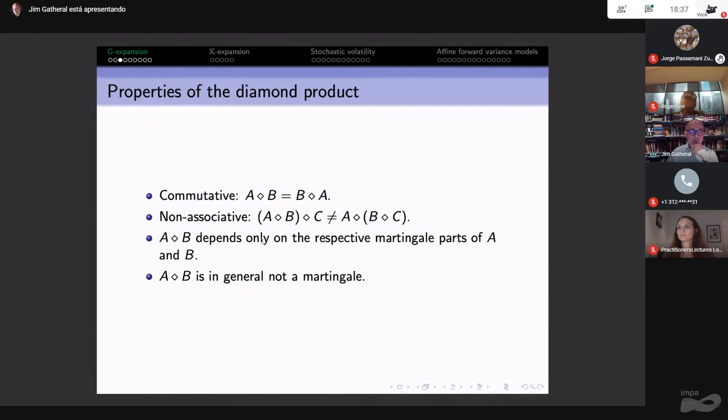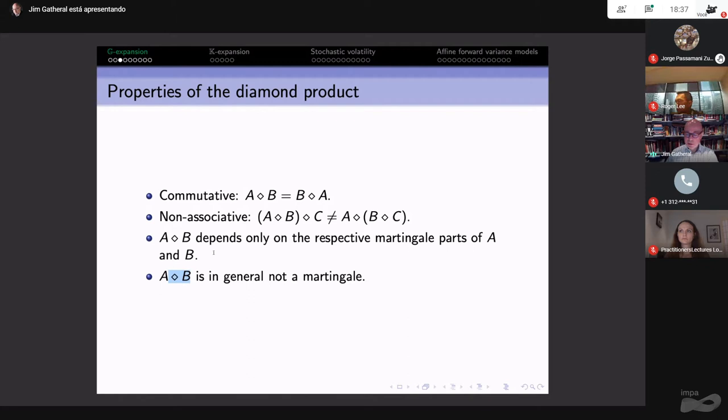What are its properties? It's commutative. It's non-associative, so everything depends on where you put the brackets. A diamond B depends only on the respective martingale parts of A and B, which is often extremely convenient for computation. It's important to note that A diamond B is in general a semi-martingale and not in general a martingale.